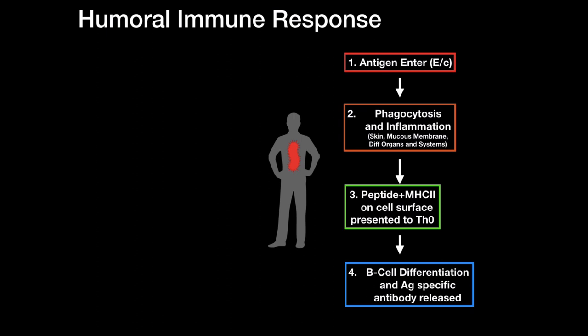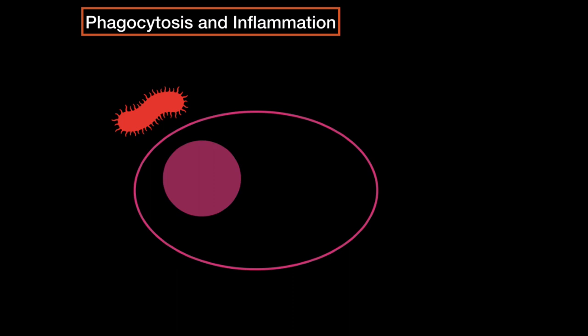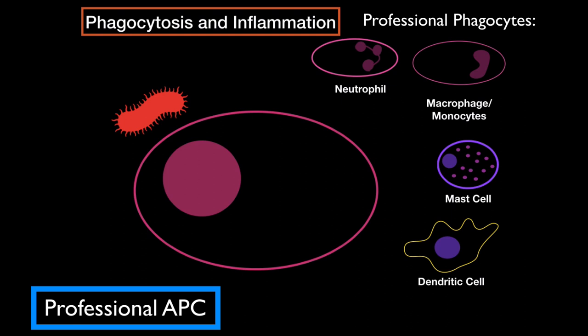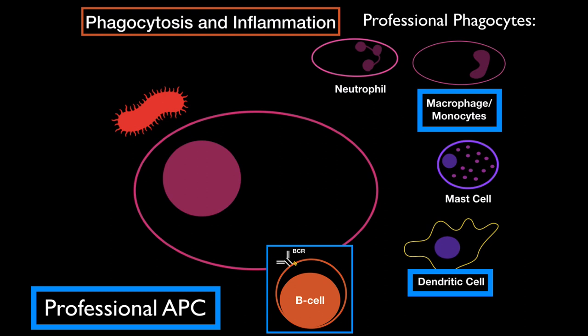Here comes the bacteria — we've finished the first step. Next comes phagocytosis and inflammation. After the bacteria has entered the body, a phagocyte is most probably going to engulf it. In our body, we have four main types of professional phagocytes: neutrophils, macrophages (monocytes in the blood), mast cells, and dendritic cells. Don't confuse these with professional antigen-presenting cells — macrophages, dendritic cells, and B cells are the professional antigen-presenting cells. B cells cannot phagocytose; they endocytose. That's a very important point.